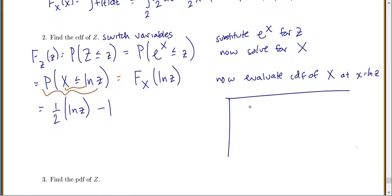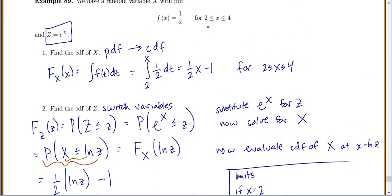We also need to come over here and find our limits, because our x limits and z limits will not be the same. So we'll say, okay, if x was equal to 2, because our limits for x went from 2 to 4.